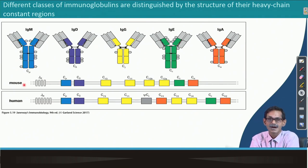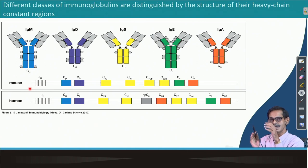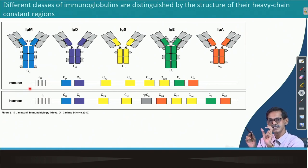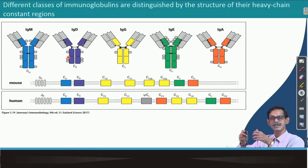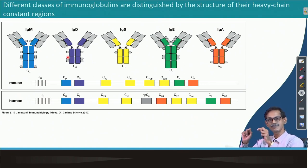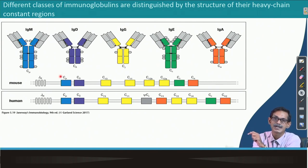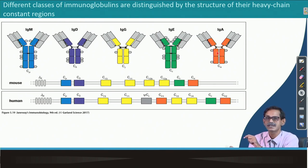After VDJ recombination is complete, it gives only the variable region. After the variable region, the constant region comes, and which constant region comes determines what isotype the final product will be. VDJ recombination in the heavy chain is common. After that, if mu comes it will be IgM, if delta then IgD, if gamma then IgG, if epsilon then IgE, and if alpha then IgA.